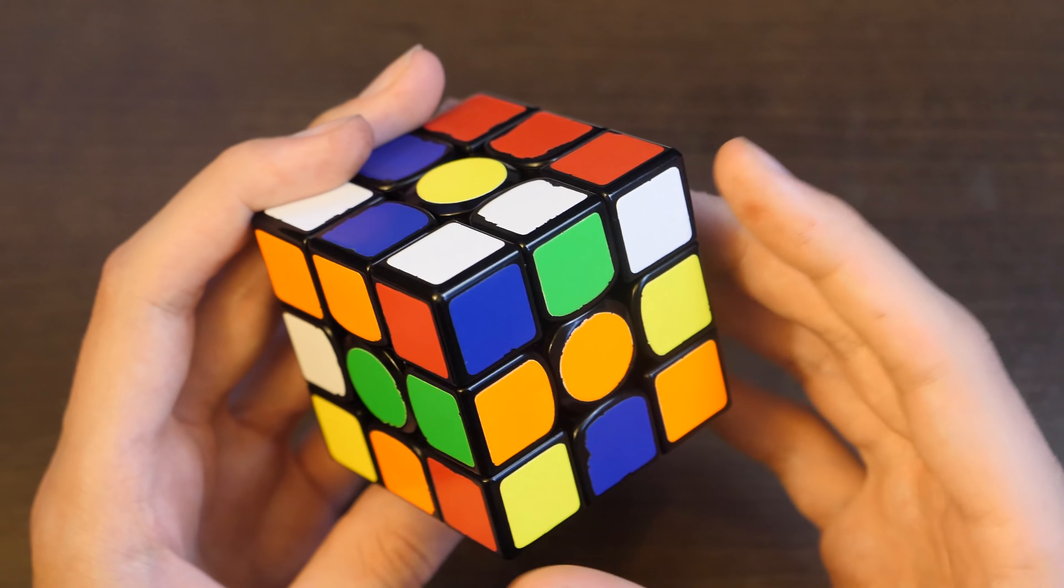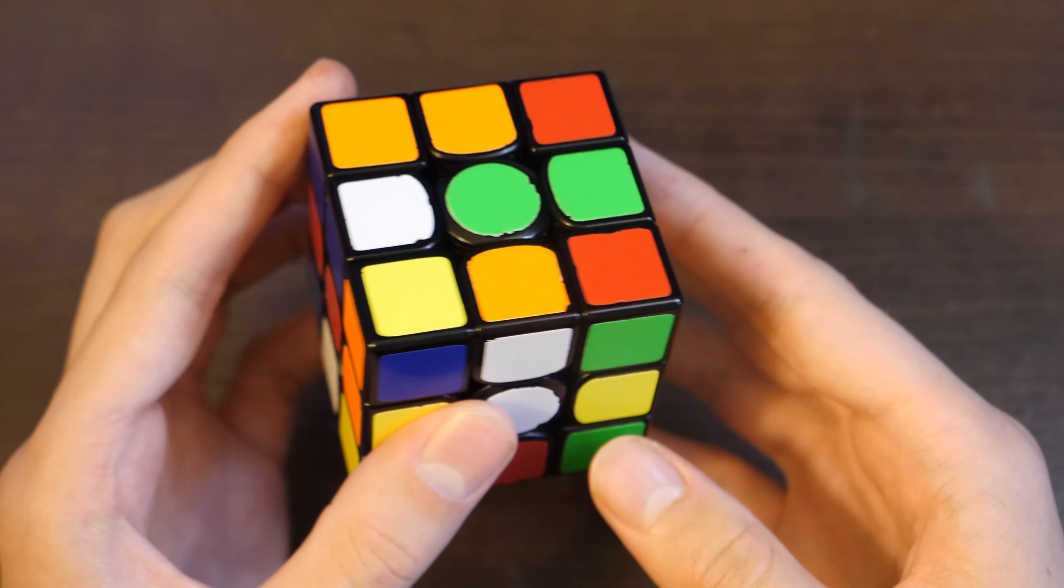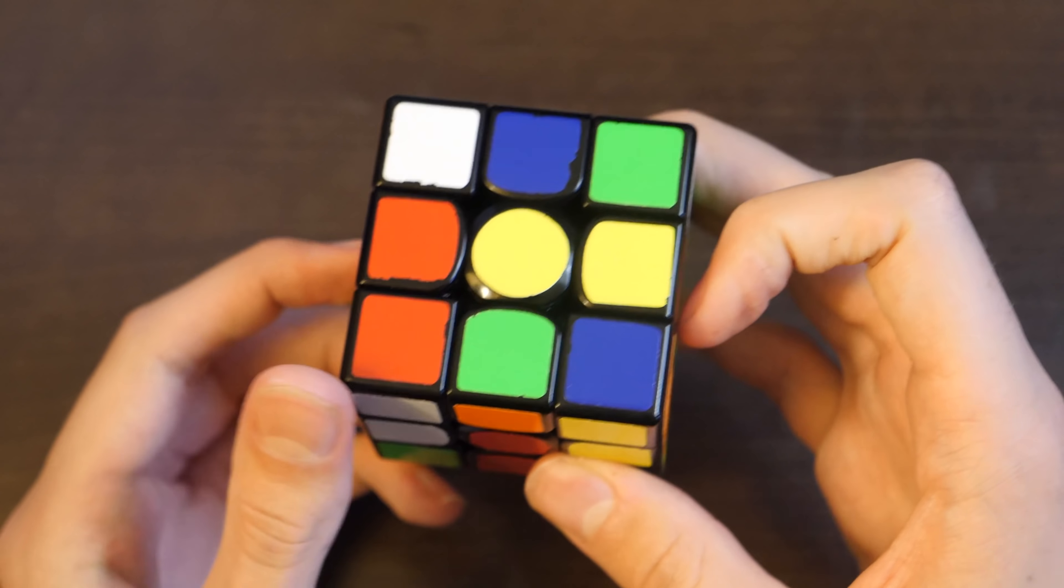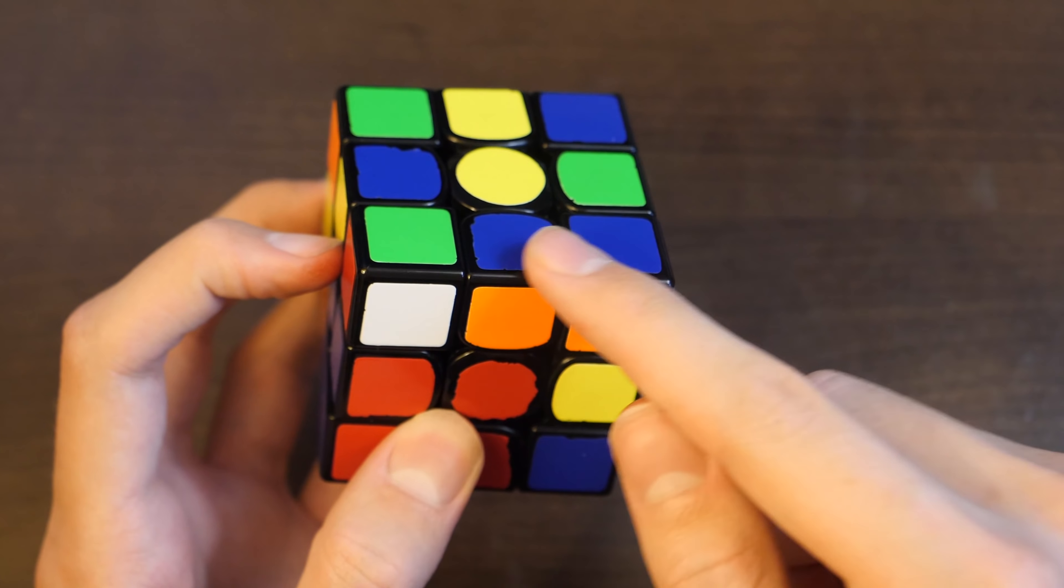For the third solve, his cross pieces are here, here, here, and here. And the pair he's solving is the red blue pair. So he's going to solve his cross while setting up this red blue pair. He solves them pretty simply, just like this. Similar idea to before.